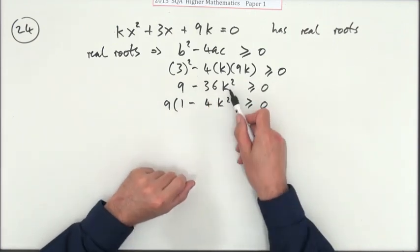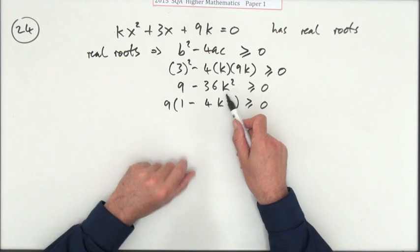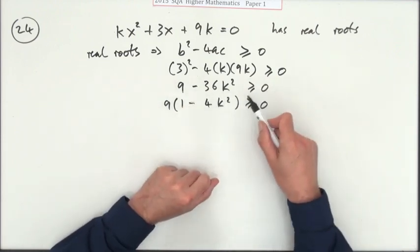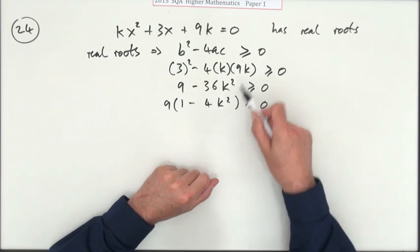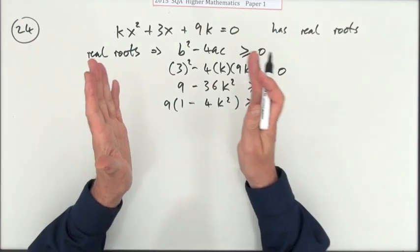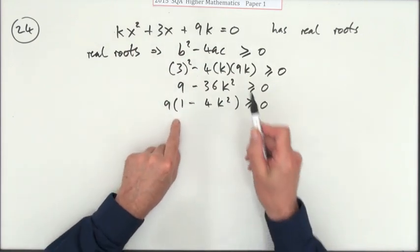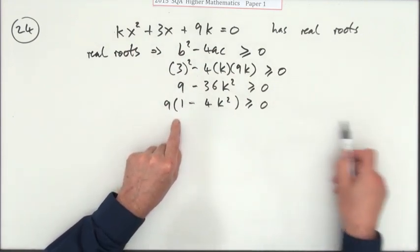Then one thing you shouldn't do though is just swap sides when it's anything more than a linear term. Don't write 9 is greater than or equal to 36k and then do the square root and have it less than or equal to plus or minus, no. If it's anything other than the linear term, keep all over to one side and factorize it.